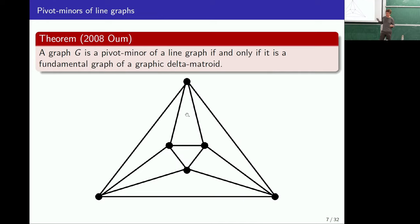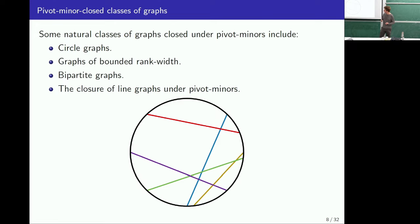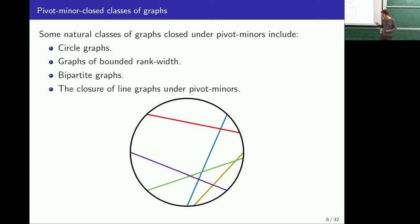One last class: if you take the class of line graphs and close it under pivot minors, you get more than just line graphs — so it's not pivot minor closed. But once you close it, you don't get the class of all graphs, so this forms another pivot minor closed class. There's also a nice characterisation: a graph is a pivot minor of a line graph if and only if it's a fundamental graph of a graphic delta matroid. I've now discussed the main classes of graphs closed under pivot minors, so let's finally define pivot minors.